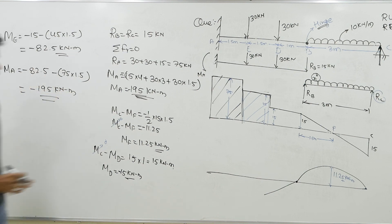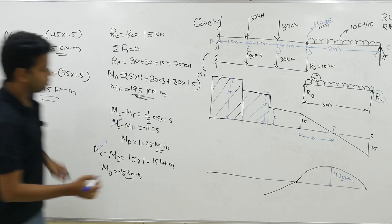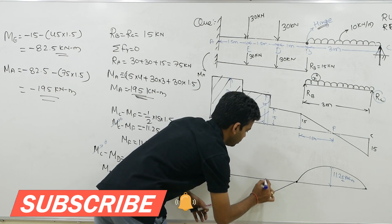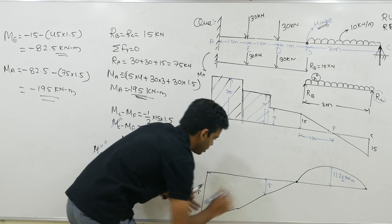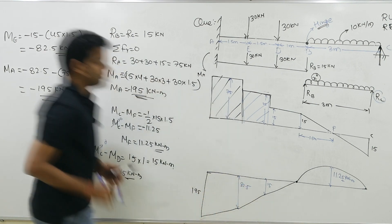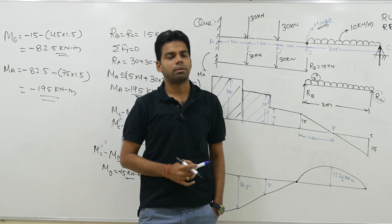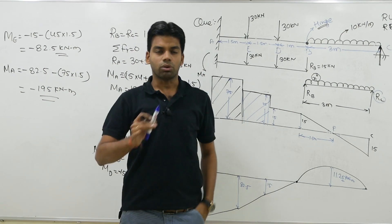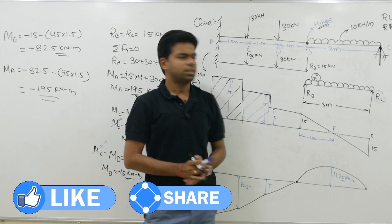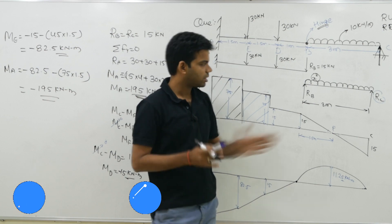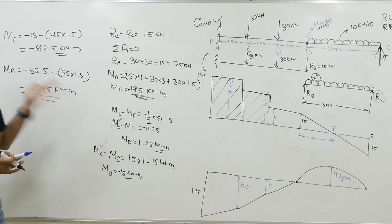So this is how we determine the bending moment at all points. The BMD goes from 0 at C, rises to +11.25 at the midpoint, returns to 0 at B, then drops to −15 at D, −82.5 at E, and −195 at A. The key concept: whenever there is an internal hinge, separate the beam at the hinge, determine reactions, then draw SFD and BMD.